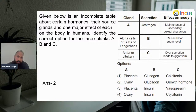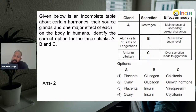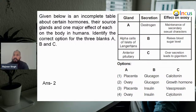Checking the options: option A — placenta is eliminated because it should be ovary. Glucagon is right. Growth hormone is right. So the answer is second. Placenta is definitely eliminated. In the fourth option, ovary is right but insulin is not right, because insulin is secreted by beta cells while glucagon is secreted by alpha cells. So our answer will be second.